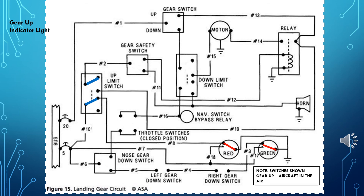Retractable gear aircraft were designed to reduce aerodynamic drag and improve efficiency in flight. Once the landing gear has been retracted, a red indicator light in the cockpit will inform the pilot that the landing gear has been raised. Once the landing gear has been raised, current will flow from the bus, through the up limit switch, to the red indicator light.